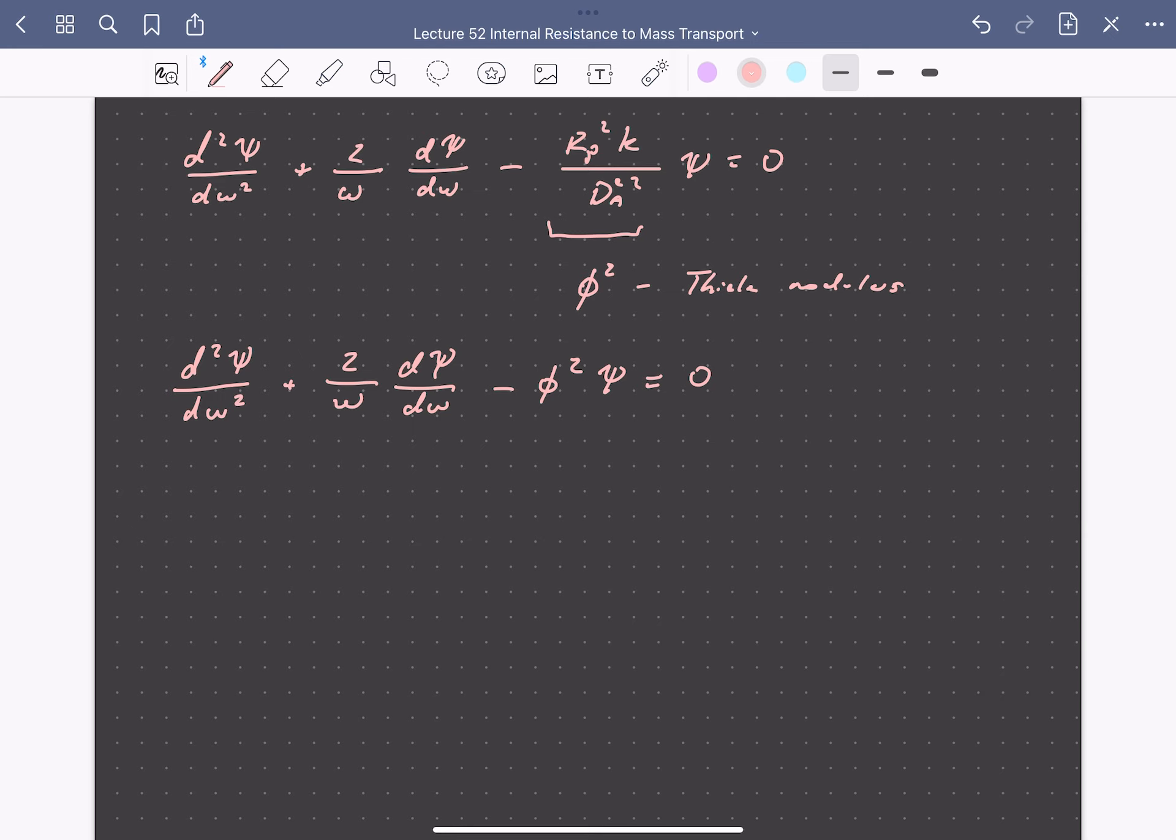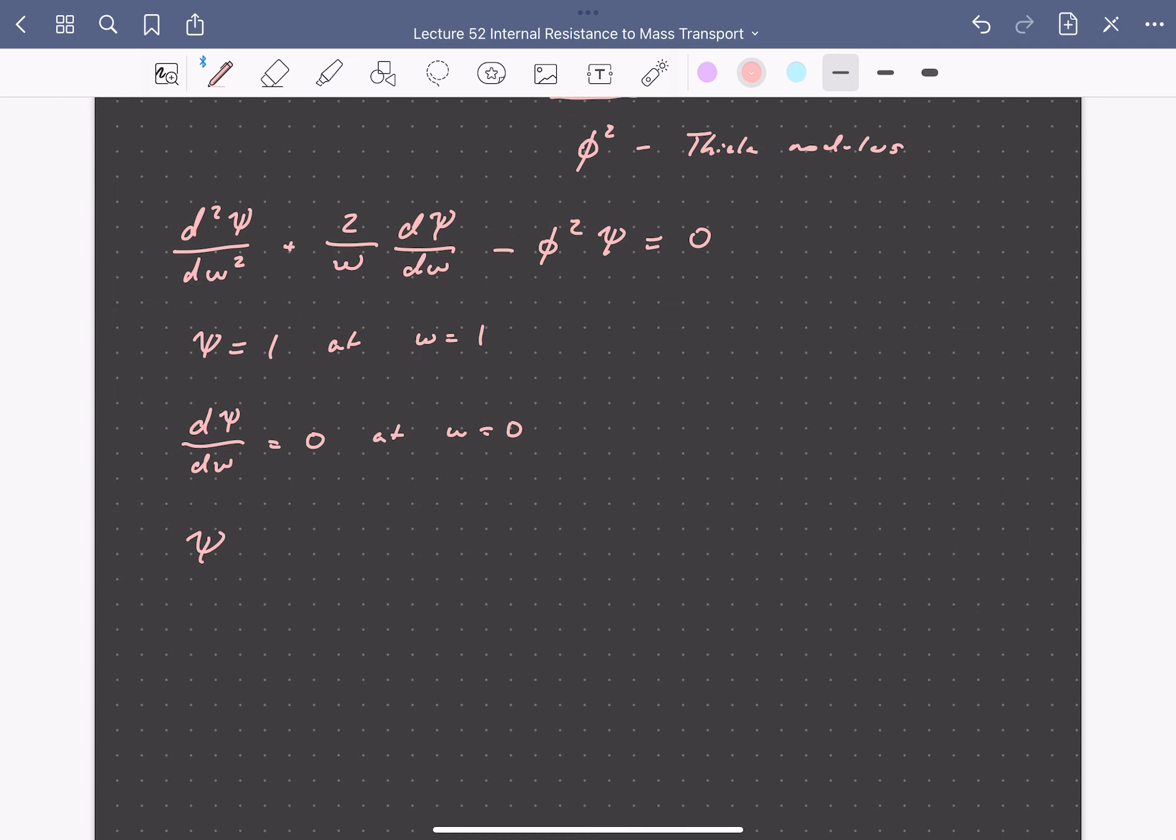And this differential equation can be solved using the appropriate boundary conditions. So here our boundary conditions are that ψ equals 1, when ω equals 1, and this just means that the concentration of A is equal to the surface concentration when we are at the surface of the particle. Our other boundary condition is that dψ/dω is equal to zero at ω equals zero, which just means that the flux must cancel at the center of the sphere. So the solution to this differential equation for ψ, which again is equal to our concentration at any point in our particle divided by the surface concentration, so this is the concentration profile we were looking for, is equal to the hyperbolic sine of our Thiele modulus times ω divided by ω times the hyperbolic sine of the Thiele modulus.